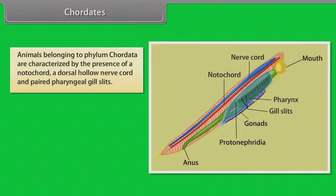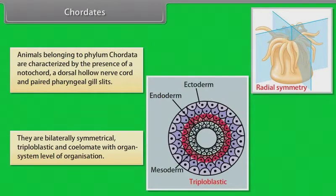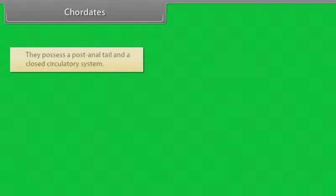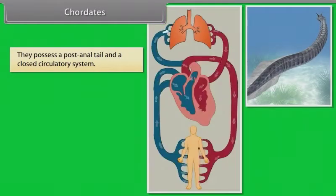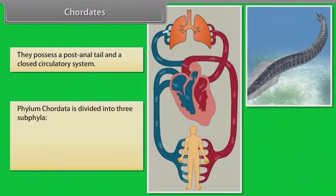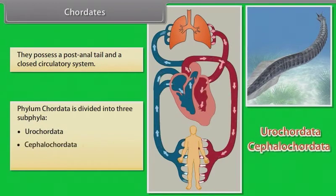Chordates. Animals belonging to phylum Chordata are characterized by the presence of notochord, a dorsal hollow nerve cord and paired pharyngeal gill slits. They are bilaterally symmetrical, triploblastic and coelomate with organ system level of organization. They possess a post-anal tail and a closed circulatory system. Phylum Chordata is divided into three sub-phyla: Urochordata, Cephalochordata, and Vertebrata.